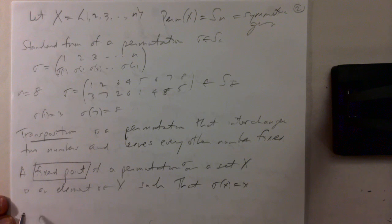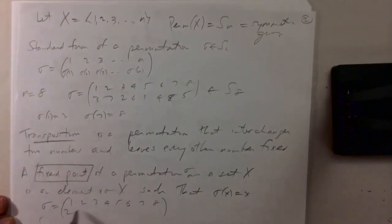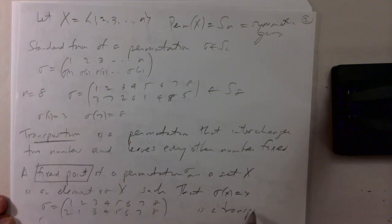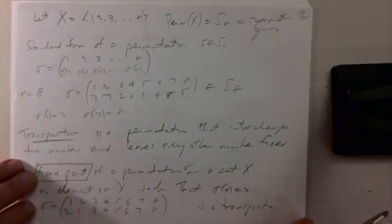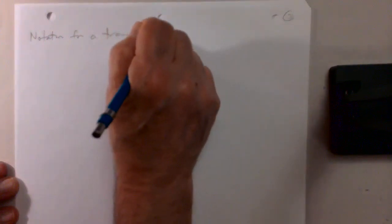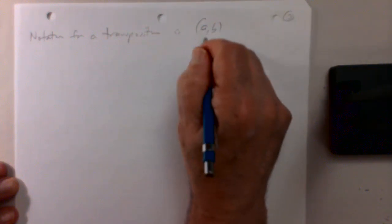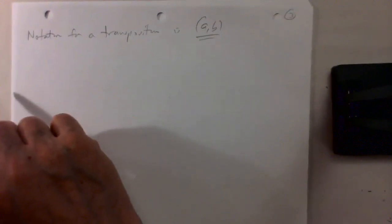For example, the permutation in S8 with top row 1,2,3,4,5,6,7,8 and bottom row 2,1,3,4,5,6,7,8 is a transposition, because 1 goes to 2 and 2 goes to 1 — they're switched — while 3 goes to 3, 4 goes to 4, and every other number goes to itself. The notation for a transposition is (a, b), meaning the permutation that transposes or switches a and b and leaves every other number fixed.